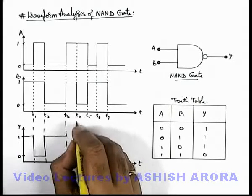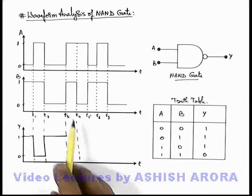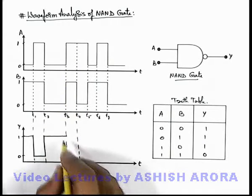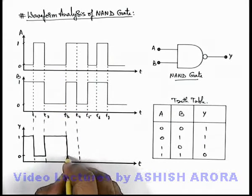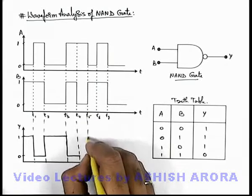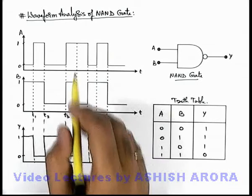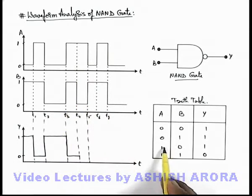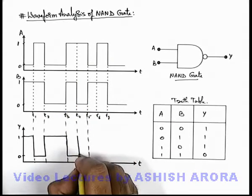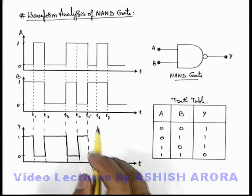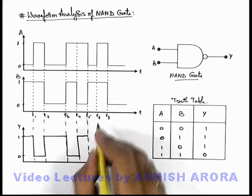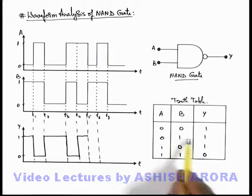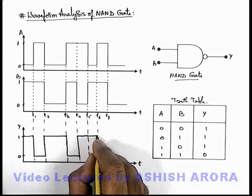Between instants t3 and t4, both inputs are high, so correspondingly the output signal should be low — state 0. Between instants t4 and t5, A is in state 1 and B is in state 0, so for input 1,0 the output will again be high. From t5 to t6, A is 0 and B is 1, so for input 0,1 the output will again remain high.